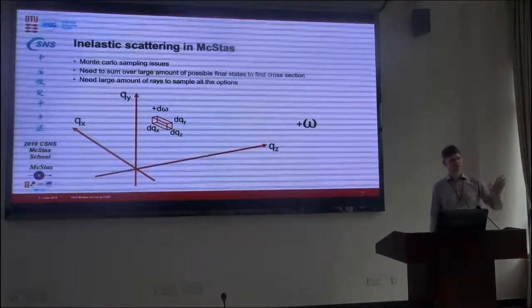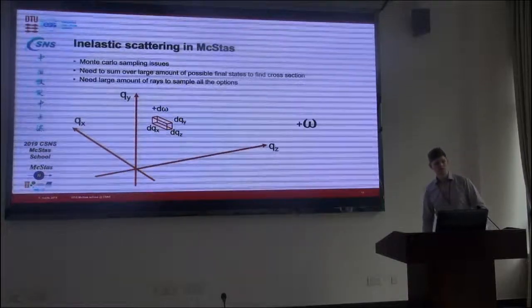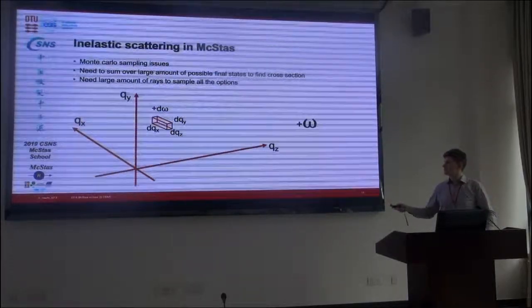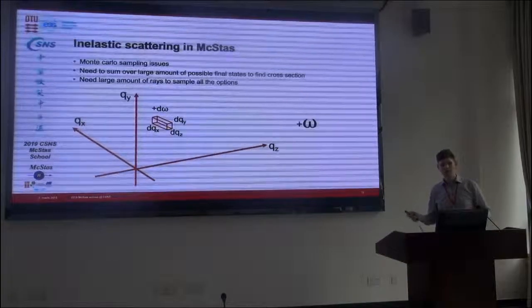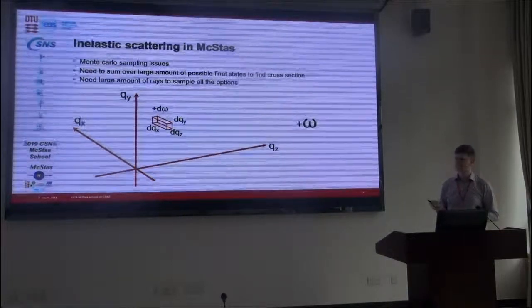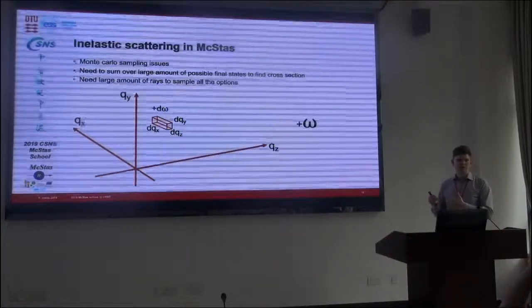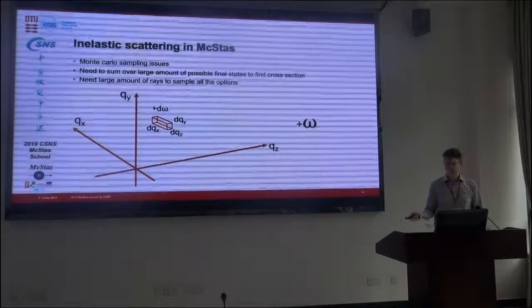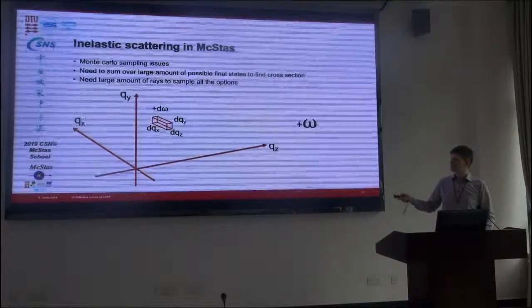Now why don't we just use that for all powder scattering in McStas? That seems very nice. Well, there are some issues with the sampling of the data file. Of course, it's okay to do for a powder, but still you have some error in the box size of your binned data. It's okay. And so often it looks a little different if you use this isotropic_sqw and the powder_N component, because the bins might corrupt it a little bit.